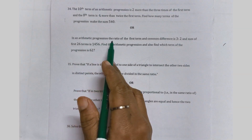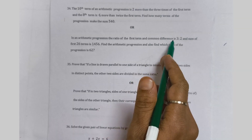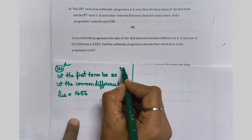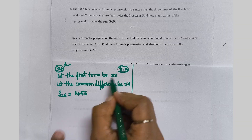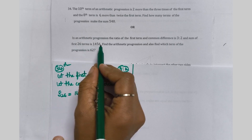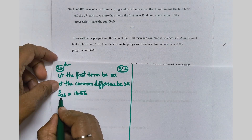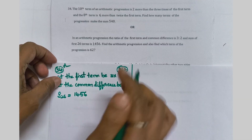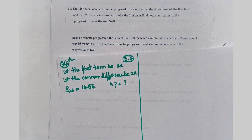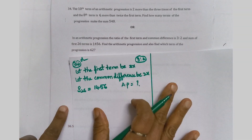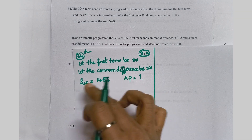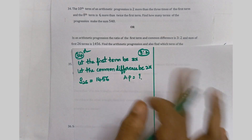Now the 35th question. In an arithmetic progression, the ratio of the first term to the common difference is 3 to 2. So we take first term as 3x and common difference as 2x. Also given: the sum of the first 26 terms is 1456, so S26 = 1456. First we will find the AP — to find the AP we need a and d.